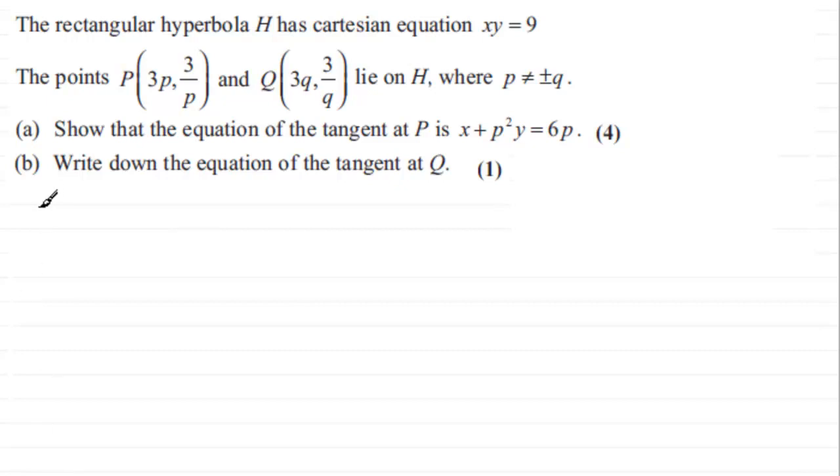So first of all, what I'd want to do is just write down the equation of H. That's XY equals 9 and to get a tangent we need to work out what the gradient is at any point on this curve. So I'm going to make Y the subject by dividing by X. So we get Y equals 9 over X or 9X to the power minus 1. And so I can differentiate this now with respect to X to get the gradient. So DY by DX would be equal to minus 9X to the power minus 2 which I'm going to write as minus 9 over X squared.